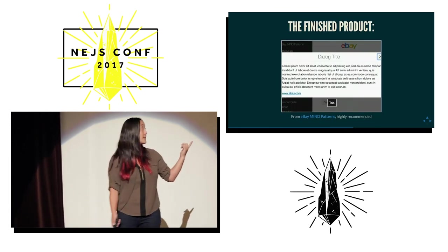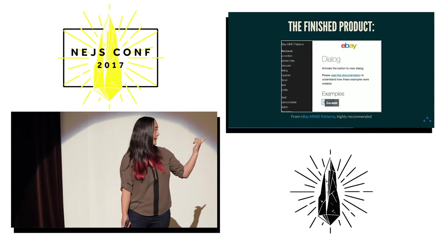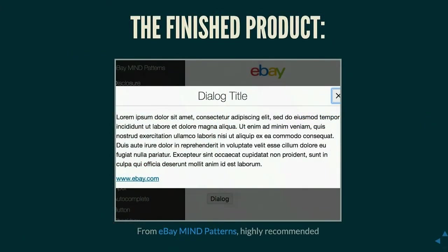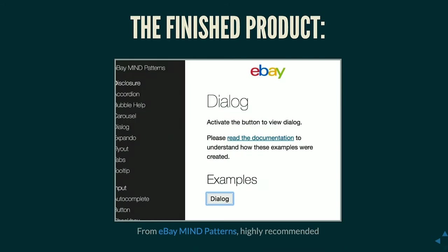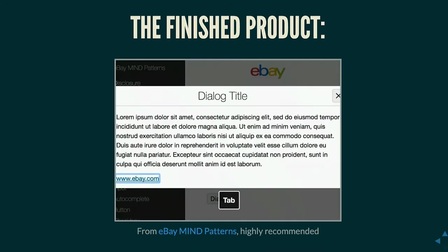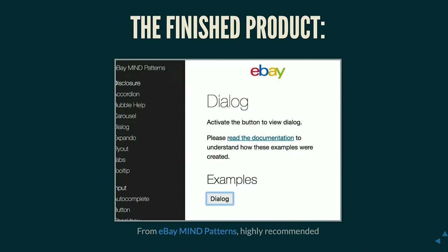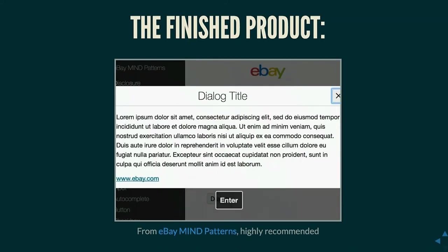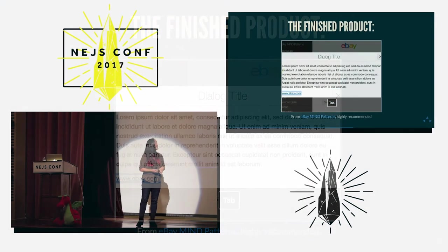This is an example of a dialog from Ian McBurney's eBay MIND Patterns library. You hit the dialog button, then tab, and you just go back and forth between the close button and the only tab stop in the dialog. When I hit Escape, it closes the dialog — that's expected behavior for dialogs and slide panels that obscure content. If you're using this pattern with a focus trap, pressing Escape should dismiss it.